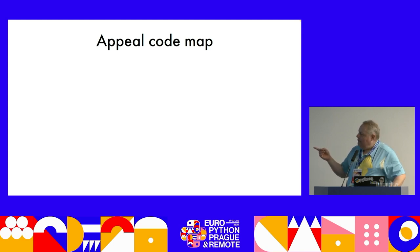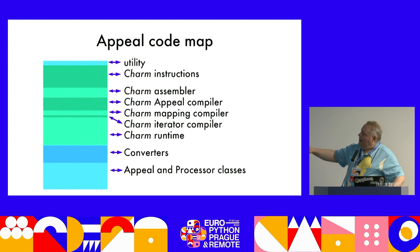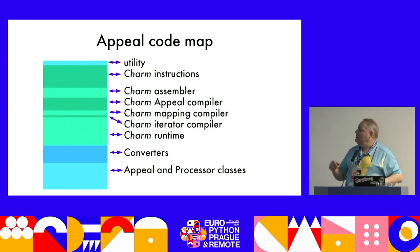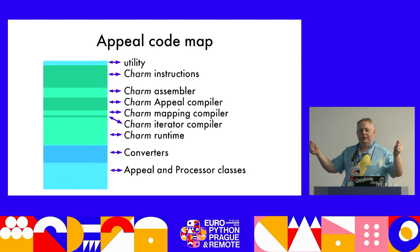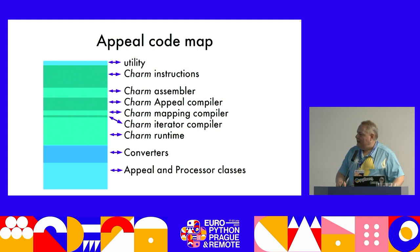Appeal is about 7,500 lines of code. The largest subsystem — more than half the implementation — is something called Charm, Appeal's internal bytecode format. A compiler calls an assembler to create a program as a sequence of bytecode instructions. There are three interpreters: one processes the command line, one generates usage text, and one generates documentation. This architecture helped corral the complexity of the problem.